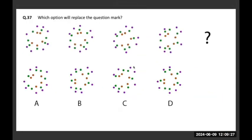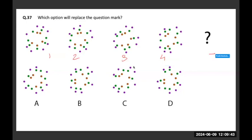Which option will replace the question mark? There is a sequence happening from positions 1, 2, 3, and 4 — we have to find what comes in the 5th position. Instead of getting confused with how the overall arrangement is shifting, it is better to take one thing at a time. I will first take these three dots.